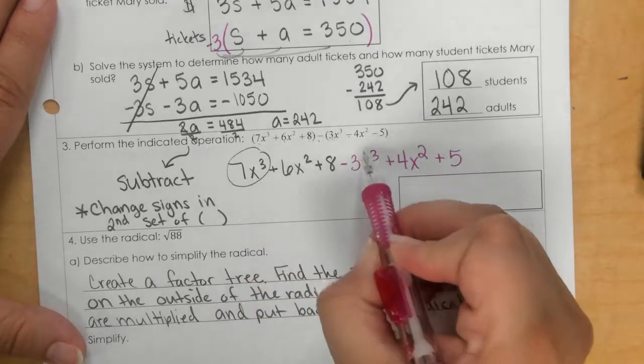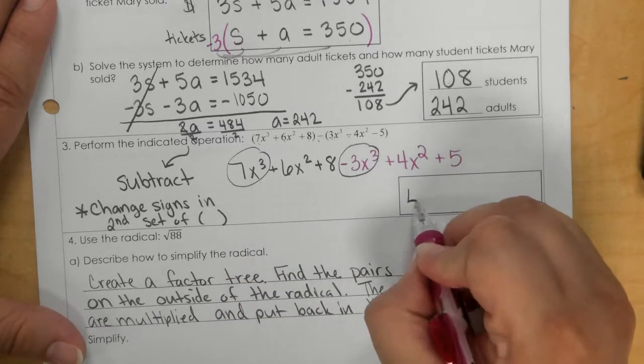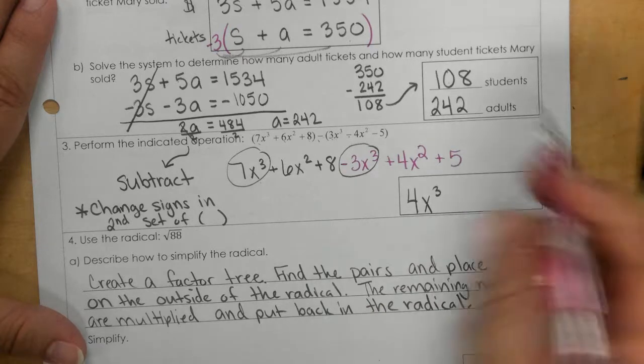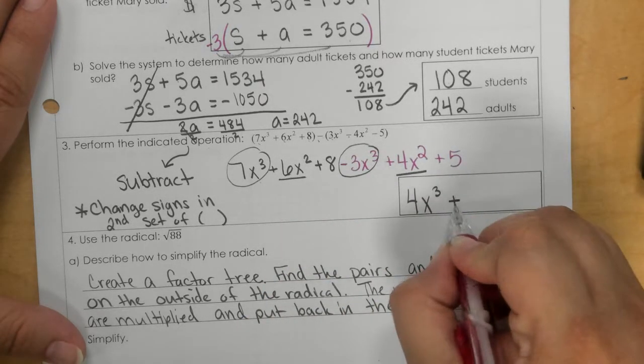So 7 minus 3 gives me 4x to the third. 6x squared plus 4x squared is 10x squared. And then 8 plus 5 is 13.